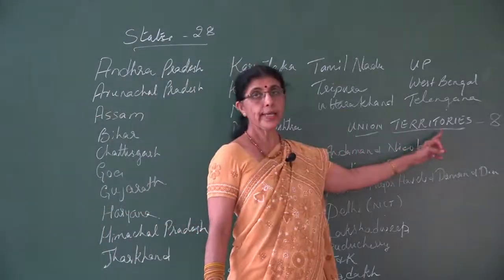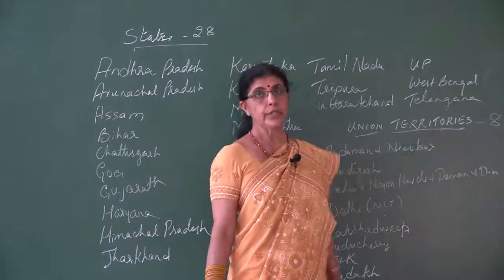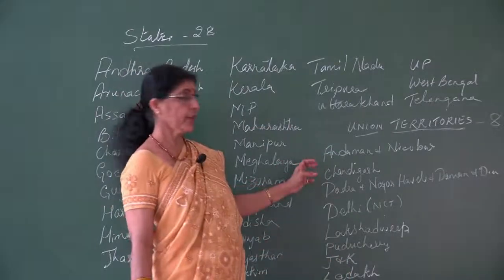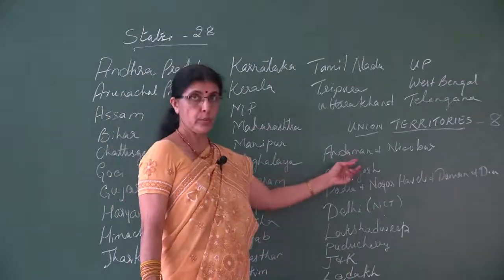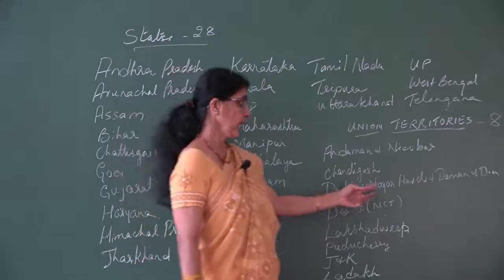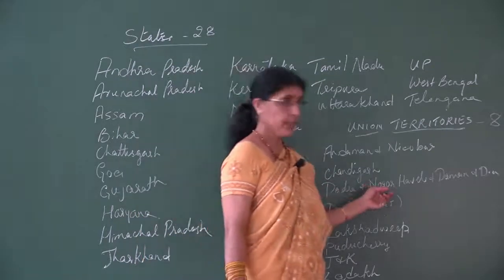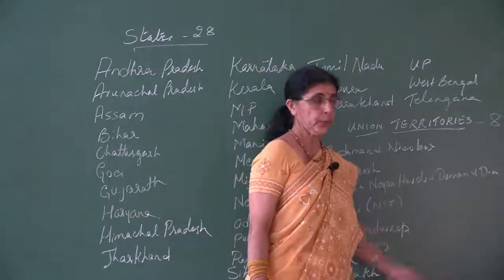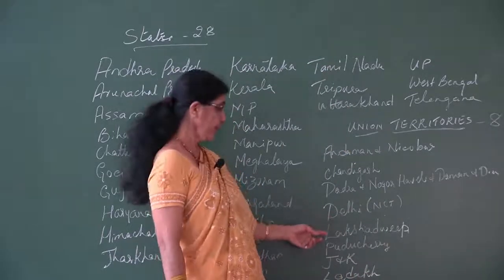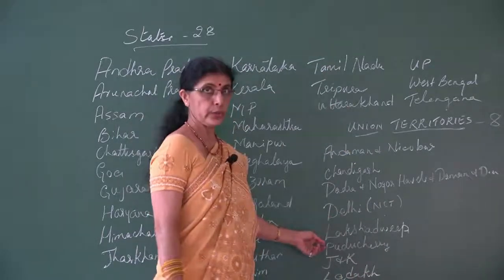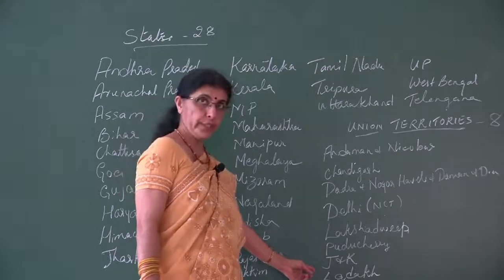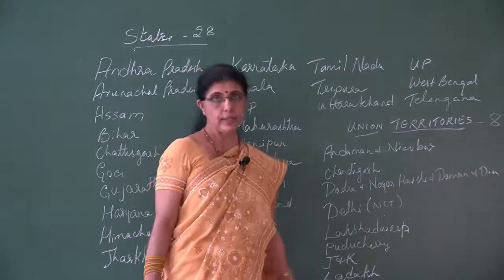The 8 union territories are: Andaman and Nicobar Islands, Chandigarh, Dadra and Nagar Haveli and Daman and Diu (now combined), Delhi, Lakshadweep, Puducherry, Jammu and Kashmir, and Ladakh.